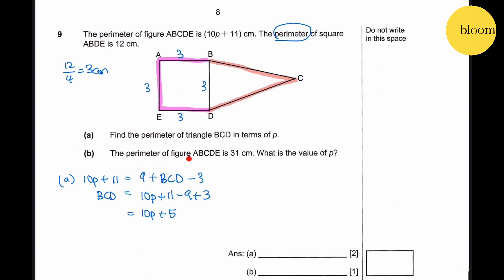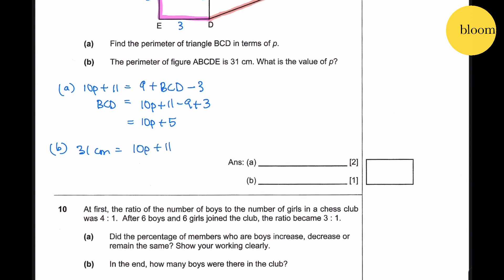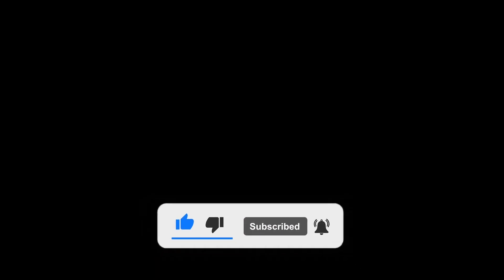Question 9b: The perimeter of figure ABCDE is 31 cm. What is the value of p? Using 10p + 11 = 31, we get p = (31 − 11) ÷ 10 = 20 ÷ 10 = 2.